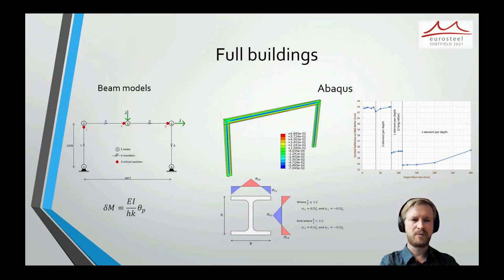And for the Abaqus models, residual stresses were included through SIGINI, according to the EC distribution that you can see here. And the tested material strength was used and the strain hardening properties were optionally included. And in addition, a RIKS analysis with large displacements was utilised.